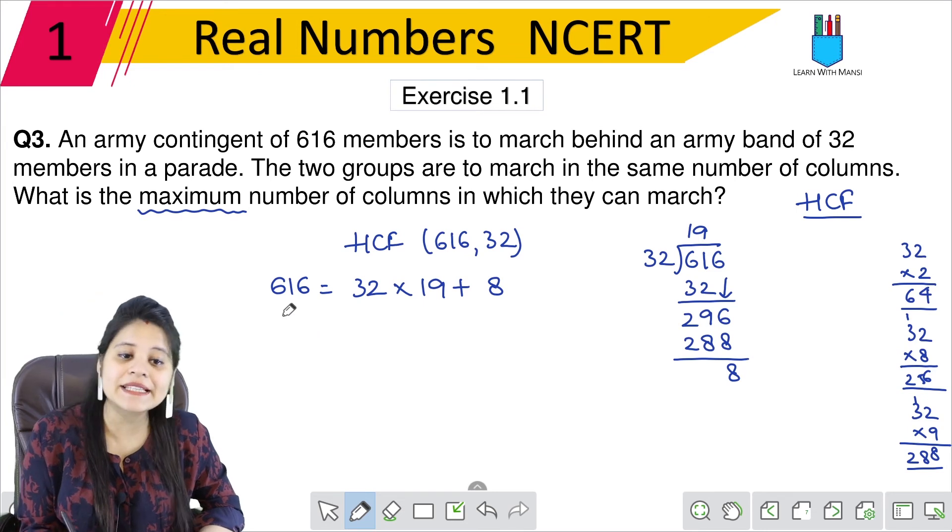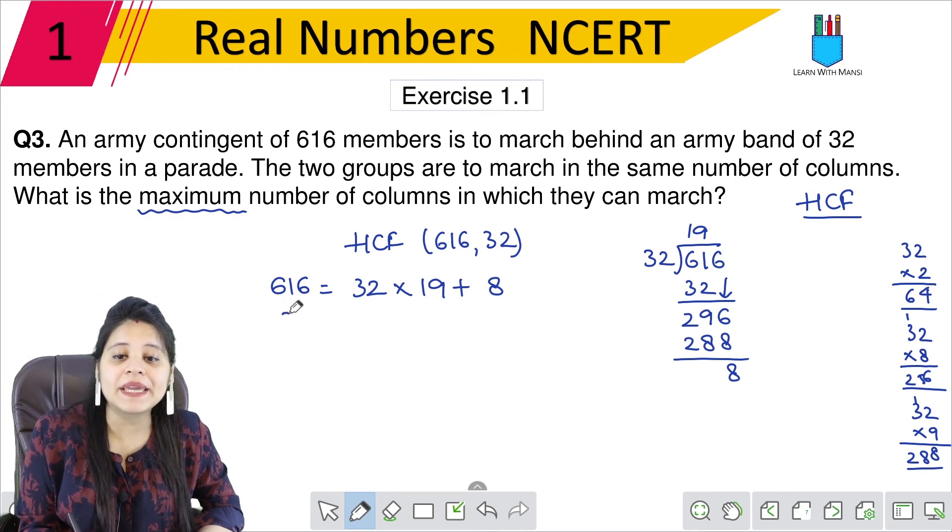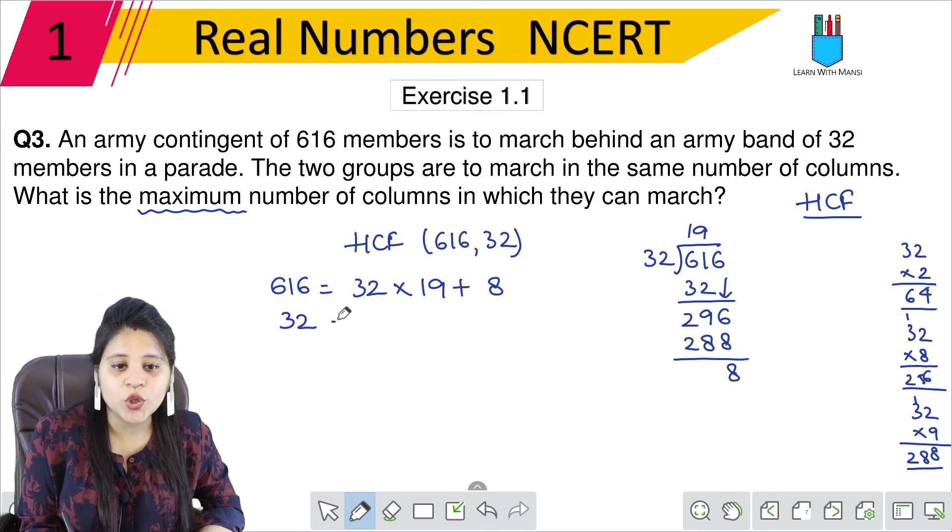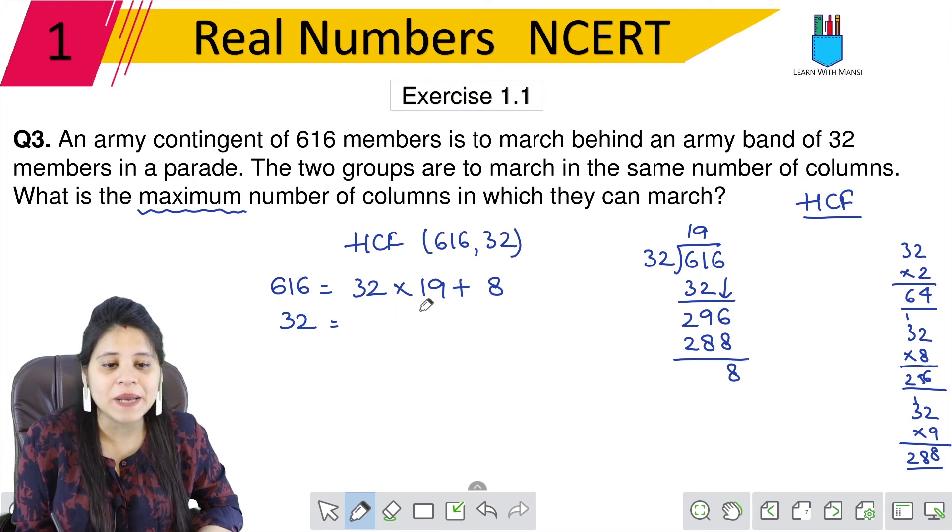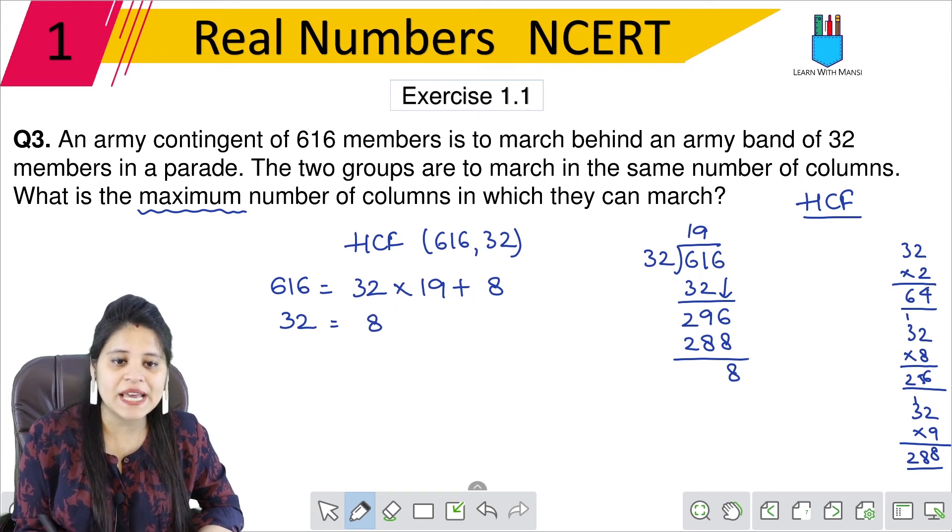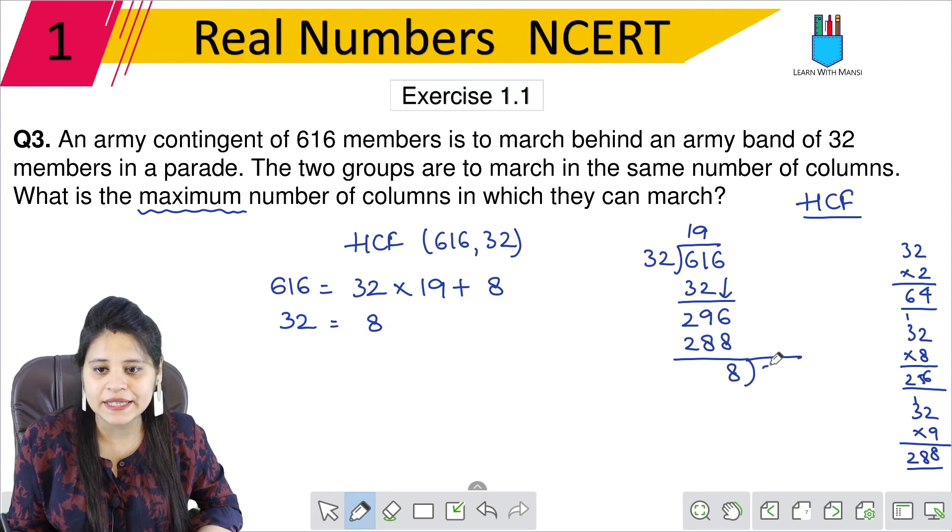So you can write here. What would we call in next step? 32. And what will we call 32? The remainder is 8. So we will do here 32 divided by 8. Now this is very simple.